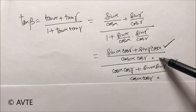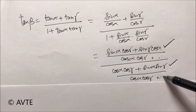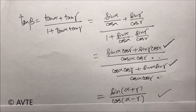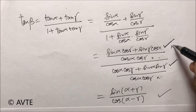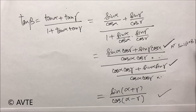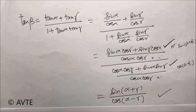We can cancel the LCM of both numerator and denominator — this is the LCM of the numerator and this is the LCM of the denominator. What remains is the formula: the numerator is sin(α + γ) and the denominator is cos(α − γ). So tan β simplifies to sin(α + γ) / cos(α − γ).